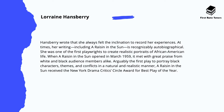Hansberry always wrote that she felt the inclination to record her experiences. At times her writing, including A Raisin in the Sun, can be recognizably autobiographical. She was one of the first playwrights to create realistic portraits of African American life. When A Raisin in the Sun opened in March 1959, it was met with great praise from both white American and African American audience members. It was arguably the first play to portray African American characters, themes and conflicts in a very natural and realistic way, and it received lots of critical acclaim including the New York Drama Critics Circle Award for best play of the year.